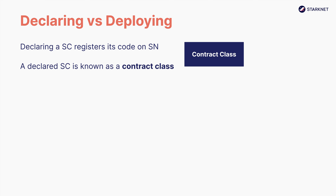A declared smart contract is known as a contract class. Here you can use the analogy of object-oriented programming: a contract class is the blueprint from which you can derive individual instances. On StarkNet, the process of creating instances from a contract class is known as deploying a smart contract.